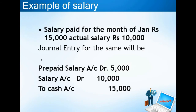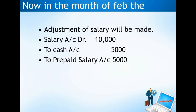In February, we have to pay the salary of Rs. 10,000 but Rs. 5,000 was already paid in advance as prepaid salary. So the February entry will be: Salary Account debit Rs. 10,000, Prepaid Salary Account credit Rs. 5,000, and Cash credit Rs. 5,000. This way, we decrease the prepaid salary asset that was recorded in the previous month.